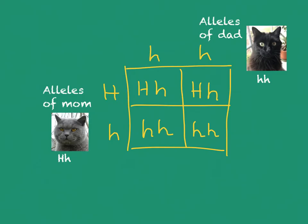By convention, the capital letter — the dominant gene — always goes first. So looking at the genotype of the kittens: we have two kittens that are heterozygous, carrying an allele for long hair and an allele for short hair, and we have two kittens that carry two alleles for long hair. So we would say it's two heterozygous to two homozygous.